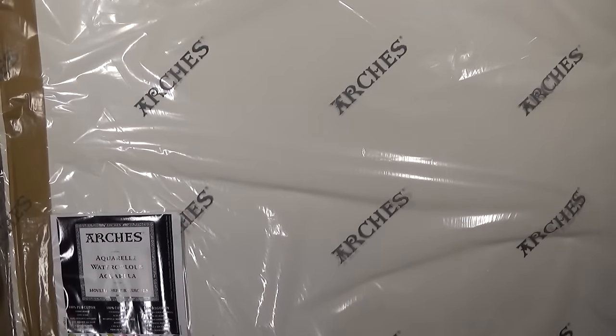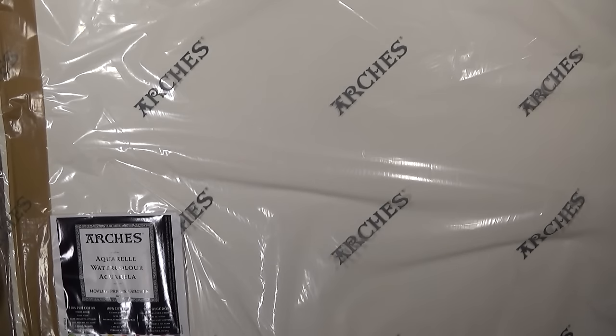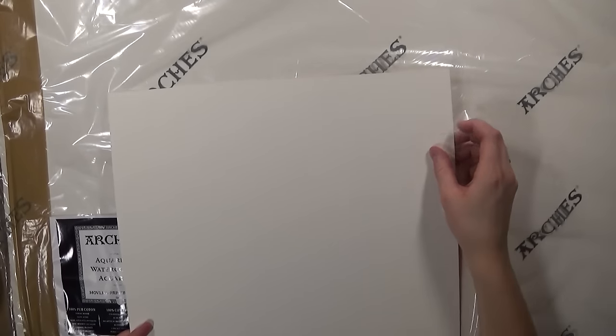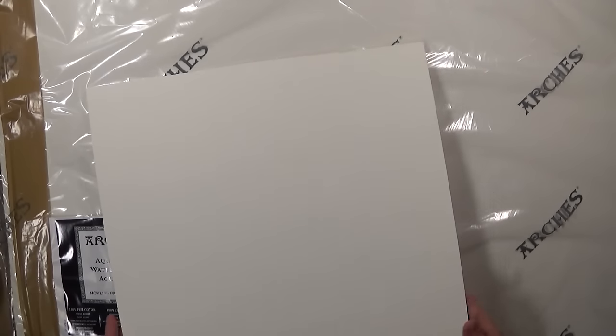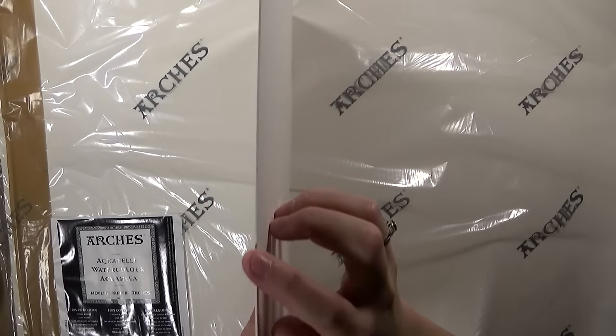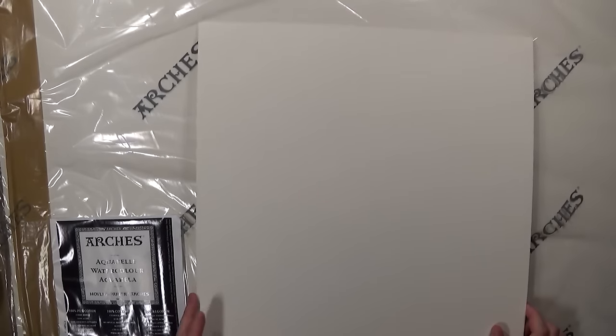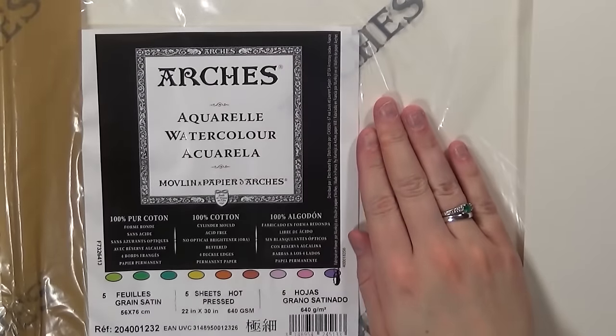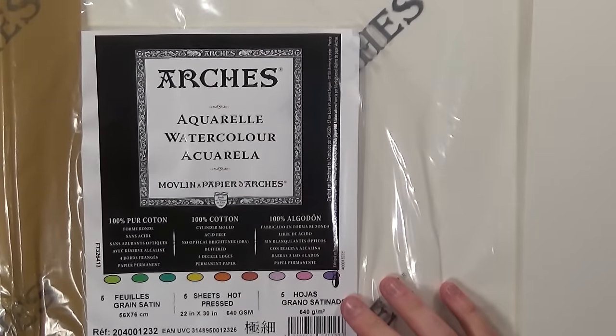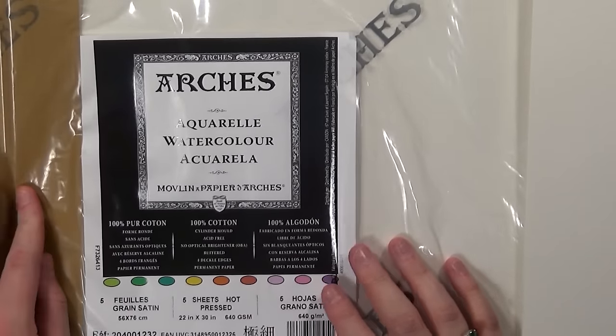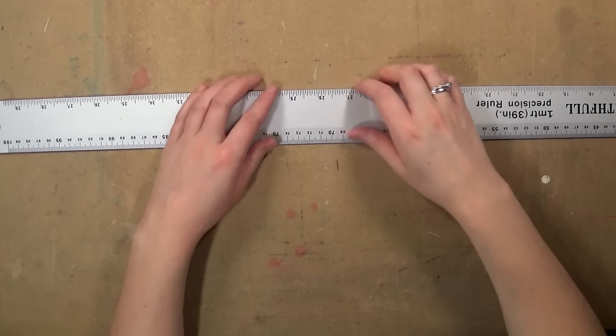The last type of paper that I like to use is the Arches Hot Pressed Watercolor paper and I use this when I'm using watercolors as well as colored pencils. I like to use this one because it's really thick so when you use watercolors as well it doesn't buckle the paper. This paper is quite expensive though. For the 5 sheets it was £50 so it comes to about £10 per 22 by 30 inch sheet, but it is a really good quality paper.